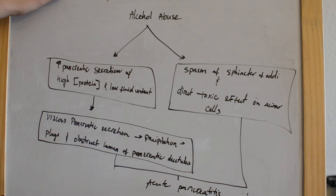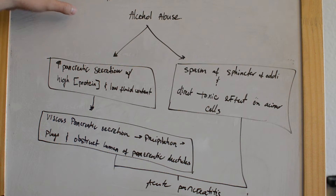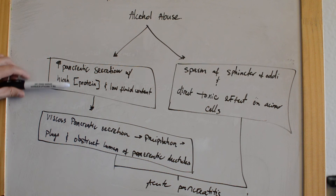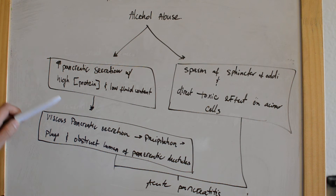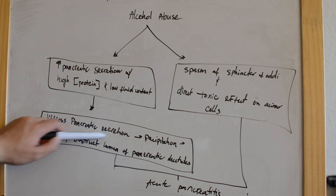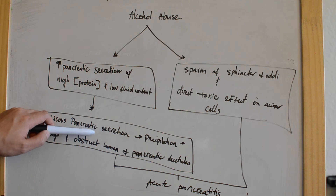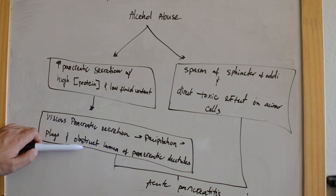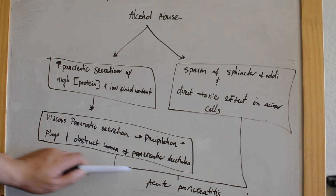Alcohol induces the secretions of pancreatic juice with high protein concentrations and a low fluid content. These viscous pancreatic secretions are prone to precipitation, forming plugs that can obstruct the lumens of the pancreatic ducts.